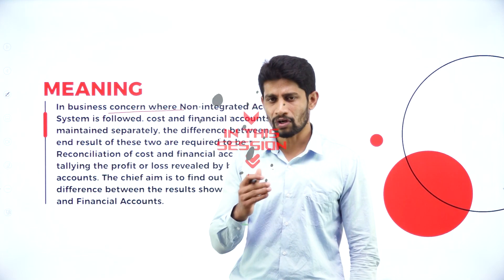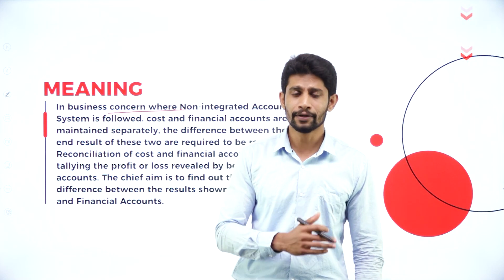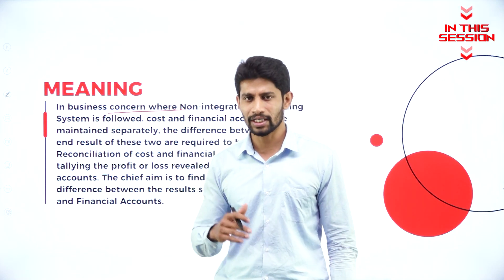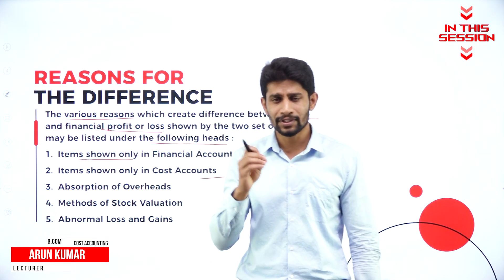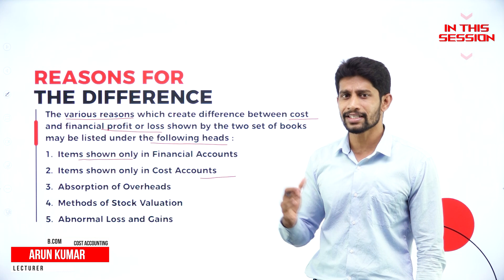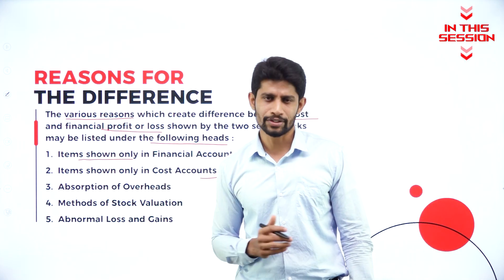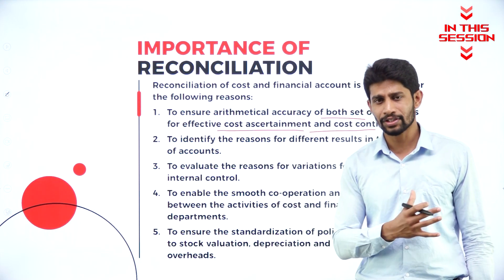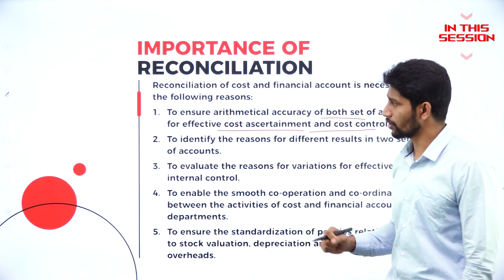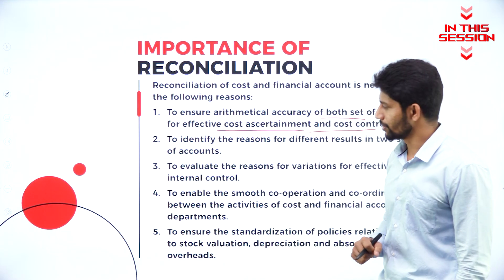If you are maintaining a cost book, the cost book will be different. If you are maintaining a financial book, the financial book will be different. So they are not integrated together — we are maintaining separate books. The items are shown only in the cost accounts, and because of that, there will be a difference in profit between the two accounts — cost and financial accounts. For effective internal control of both books, it is very important to prepare a reconciliation statement.